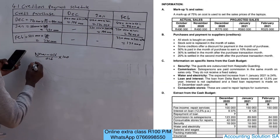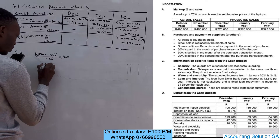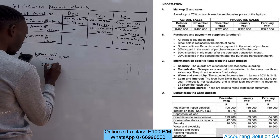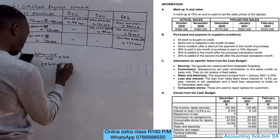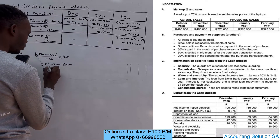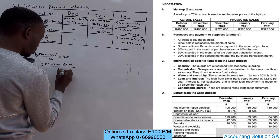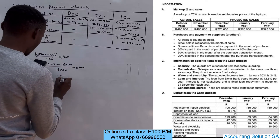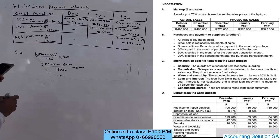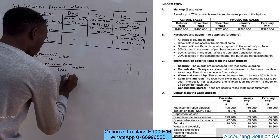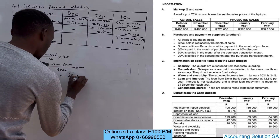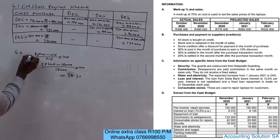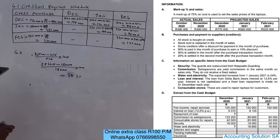The new amount for security is 28,500 and the old amount is 18,000. So: 28,500 minus 18,000, divided by 18,000, multiplied by 100. This gives us 58.3 percent increase.